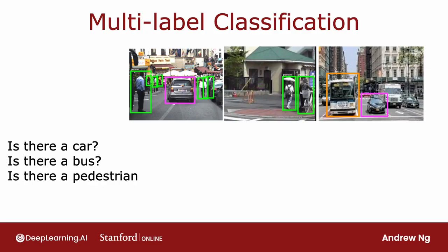Let me show you what I mean. If you're building a self-driving car or maybe a driver assistance system, then given a picture of what's in front of your car, you may want to ask questions like: is there a car, or at least one car? Is there a bus? Is there a pedestrian, or are there any pedestrians?